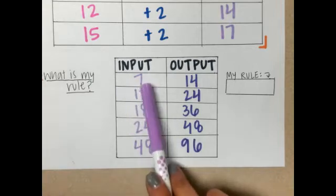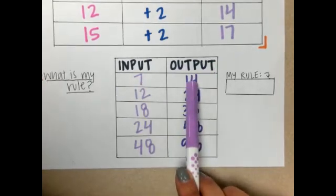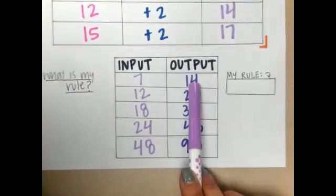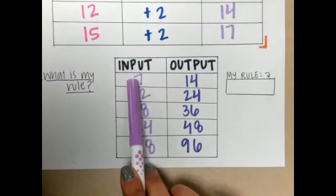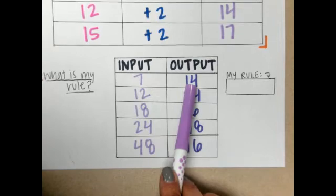I have 7 and out came 14. I can think of multiple things I can do. I know that 7 plus 7 is 14. So is my rule plus 7?